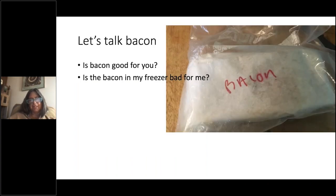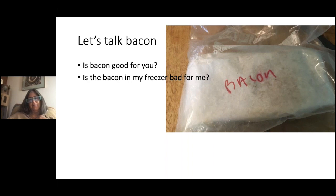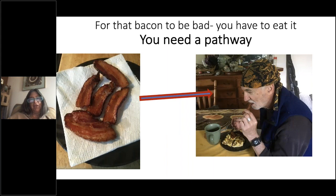Another thing with risk assessment: you need a pathway, and it's a question of dose and response. There's a great sausage store in town with wonderful bacon. Is that bacon bad for me sitting in the freezer? No — it's not emitting volatile chemicals that'll somehow enter my system. I need the pathway; I have to eat it. That is the pathway by which bacon can cause harm.